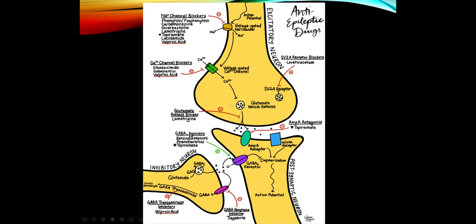Lamotrigine acts by blocking glutamate, an excitatory neurotransmitter. Topiramate has multiple actions: it acts against sodium channels, acts as an AMPA antagonist — AMPA being one of glutamate's receptors alongside NMDA — and also acts as a GABA agonist, enhancing inhibitory neurotransmission. Valproic acid also has many mechanisms, including inhibiting the breakdown of GABA. After the lecture, come back to this illustration as a helpful visual reference.